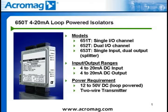Process current inputs are 4 to 20 milliamp DC analog signals. These isolated transmitters offer reverse polarity protection and a small input voltage drop of 1.5 volts DC per channel on the 651T and 652T, and 3 volts on the 653T signal splitter.